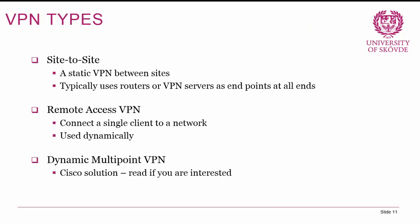There are different VPN configurations, where site-to-site and remote access are the most common. Site-to-site VPN is a static tunnel between two sites, essentially equivalent to leasing a line, with routers or VPN servers as endpoints. Remote access VPN connects a single client to a network, allowing remote workers to connect from their own PC and appear logically as part of the corporate network. Remote access VPNs are more dynamic, used on an as-needed basis. Cisco also has a dynamic multi-point VPN solution for further reading.